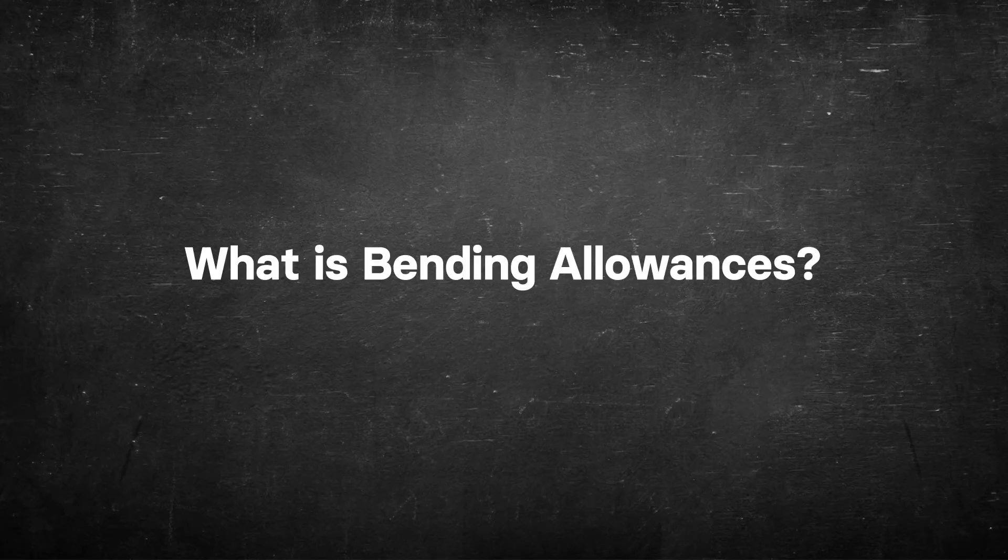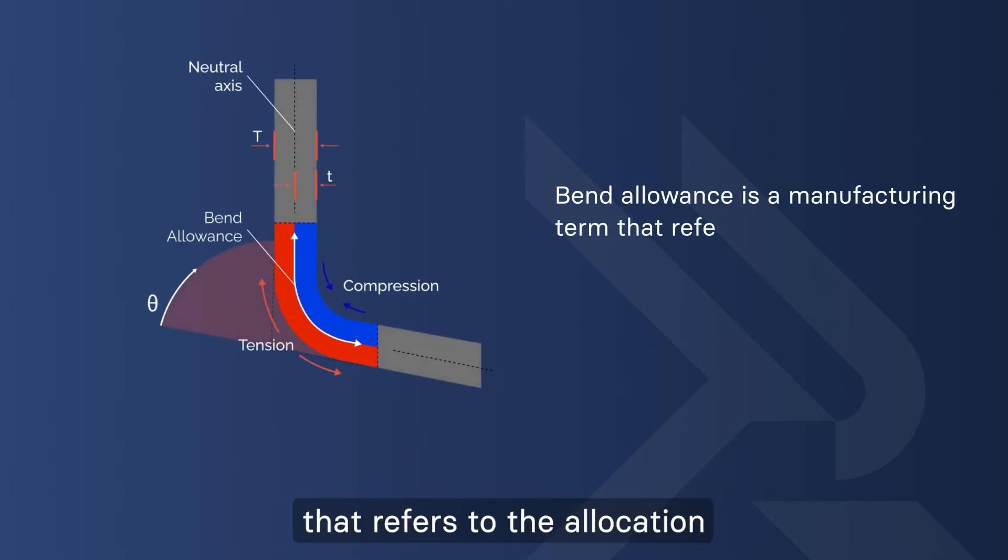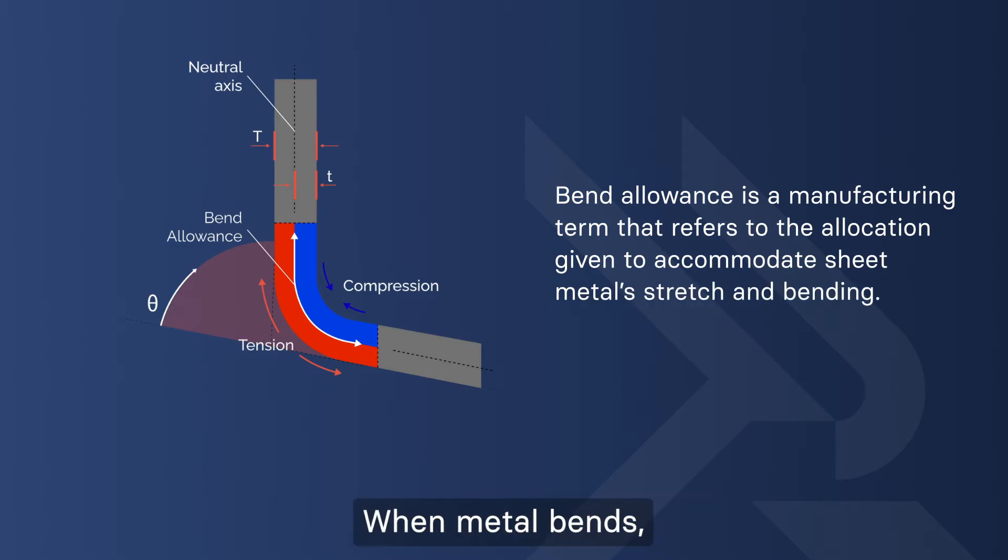What is bending allowance? Bend allowance is a manufacturing term that refers to the allocation given to accommodate sheet metal's stretch and bending. When metal bends, it doesn't fold precisely as intended due to the spring-back effect.